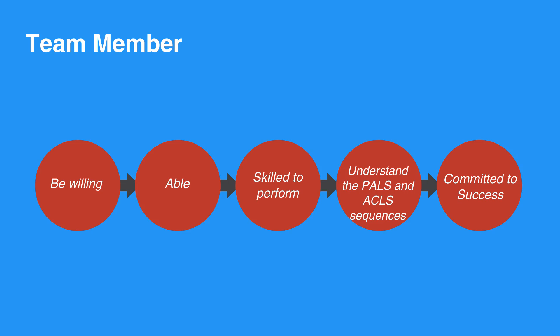Good team dynamics consists of clear roles and responsibilities, knowing limitations, constructive interventions, knowledge sharing, summarizing and reevaluating, closed-loop communication, clear messages, and mutual respect.